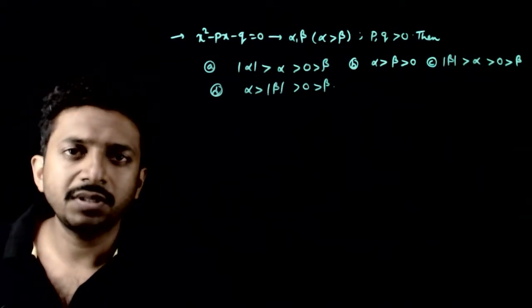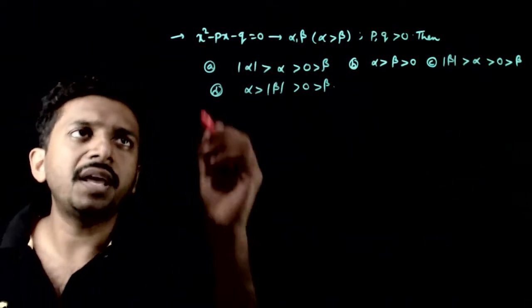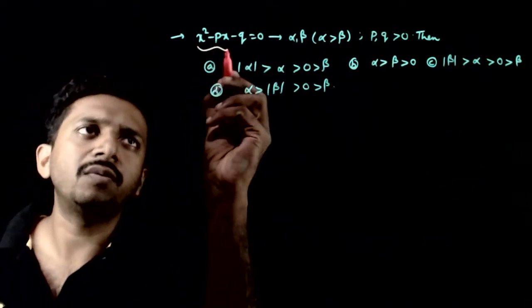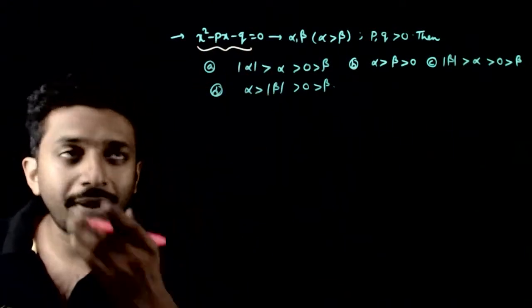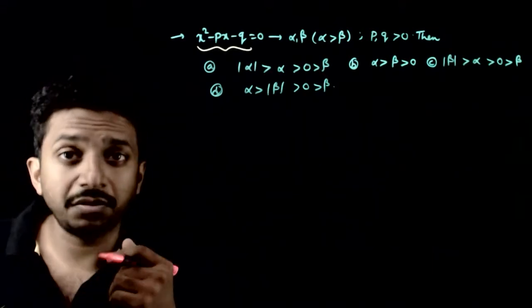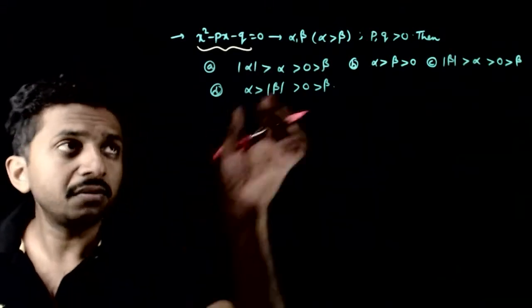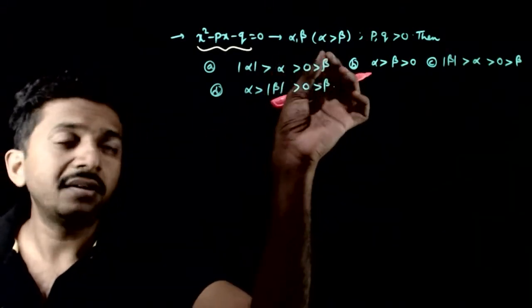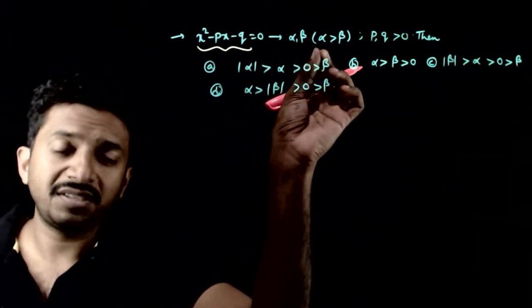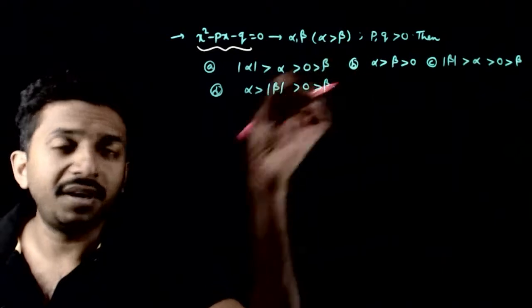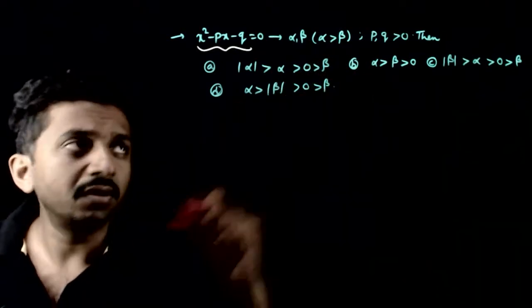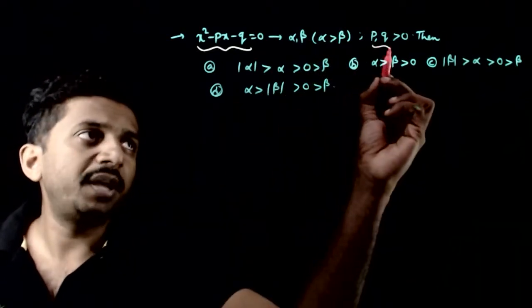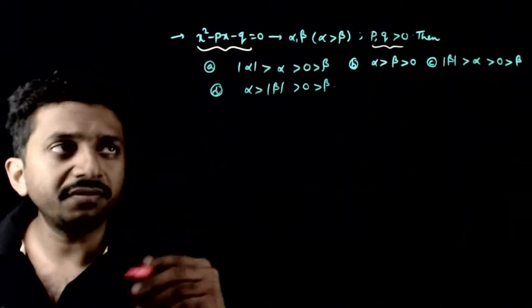Welcome students. In this question, we have a quadratic equation x squared minus px minus q equals 0, whose roots are alpha and beta, where alpha is the bigger root and beta is the smaller root, and both p and q are positive.